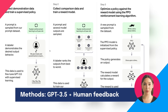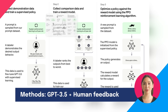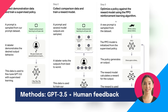To create a reward model for reinforcement learning, OpenAI had to collect comparison data. This consisted of two or more model responses, which were ranked by quality. They did this by taking conversations that AI trainers had with the chatbot and randomly selecting a model-written message. They then sampled several alternative completions and had AI trainers rank them. Using these reward models, OpenAI were able to fine-tune the model using proximal policy optimization.